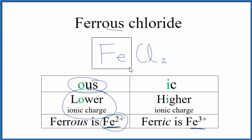And we have FeCl2 as the formula for ferrous chloride. In the newer naming system, this would be called iron(II) chloride because the iron has that 2+ charge.